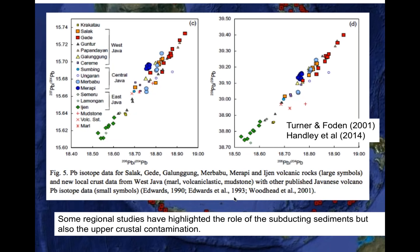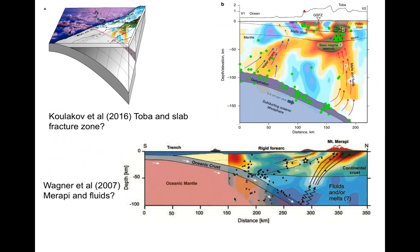More modern isotope geochemistry studies — although not many, as field work is difficult due to dense vegetation — show the signature of subducting sediments in volcanic rocks, but also a significant signature from the upper crust. Assimilation of upper crust material, classically carbonate — there are many limestones in the region — is also playing a role in the types of rocks that are erupted.